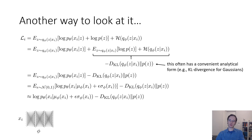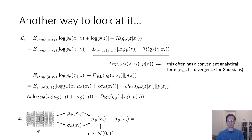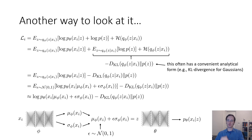You can think of it as follows: the inference network parameterized by phi takes in X_i and outputs mu_phi(X_i) and sigma_phi(X_i). You sample epsilon from a zero-mean unit-variance Gaussian and combine it with mu and sigma to get Z, which is fed into P_theta of X_i given Z to produce a distribution over X. This is a complete computation graph where everything has known derivatives, so you can backpropagate through the whole thing with respect to both phi and theta. Calling gradients on this in your automatic differentiation software gives you derivatives of L with respect to both theta and phi.